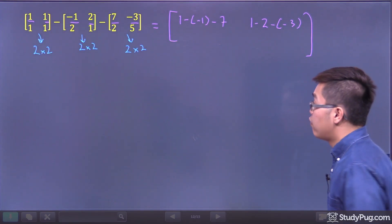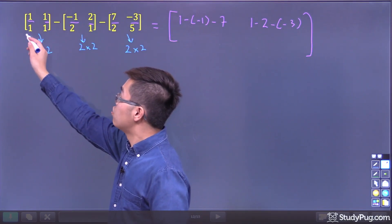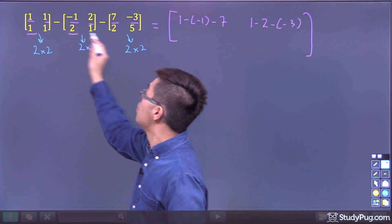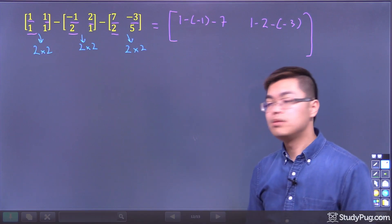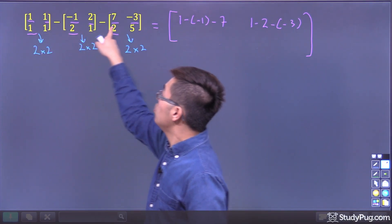Now we're going to look for the last two entries right here. We see the corresponding entries 1, 2, and 2. So it's going to be 1 minus 2 minus 2.